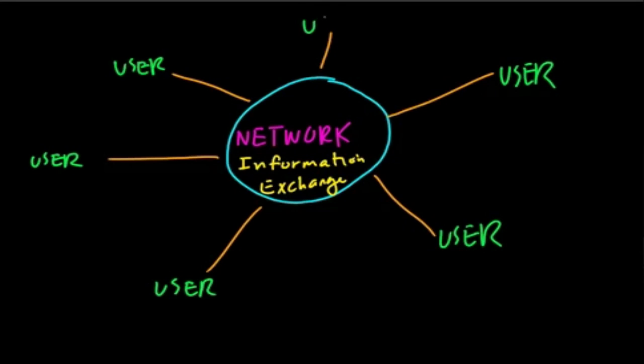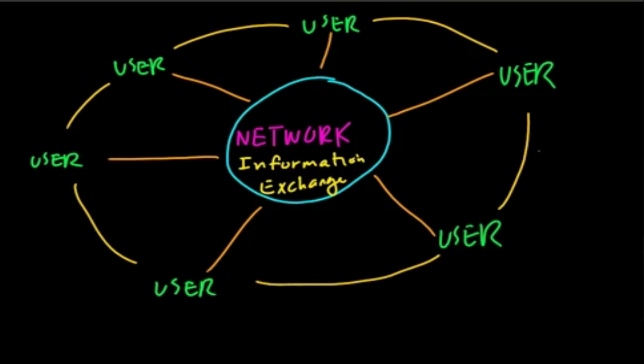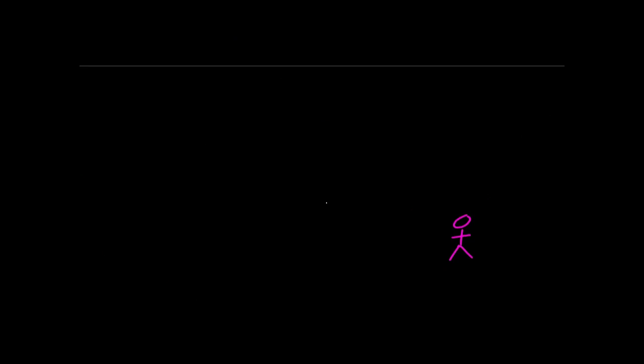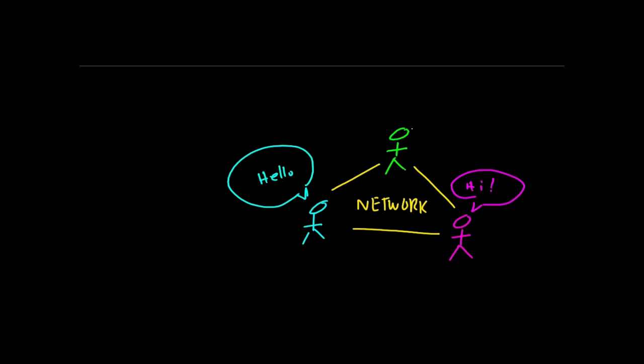And you were, I think, earlier you were mentioning something about social networks. A social network is an example of a network. It's right in the name network. A social network is a group of people and their information is flowing back and forth between them. You know, if you think of some of the bigger social networks, you're just using this stuff to...